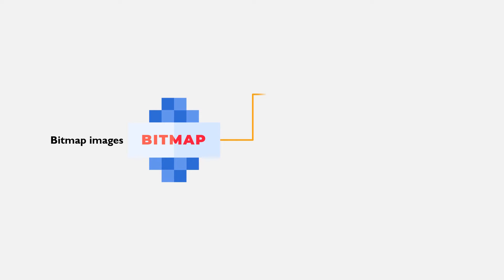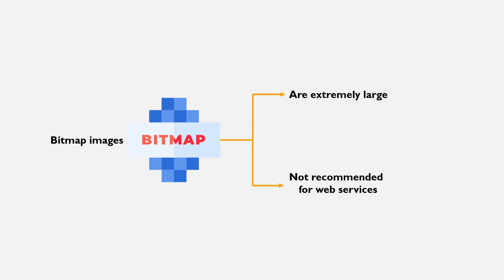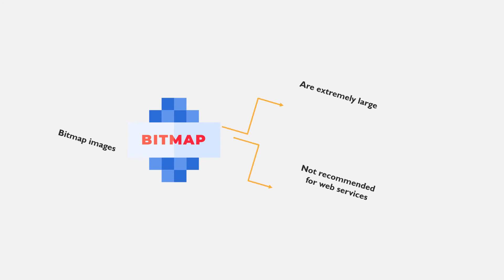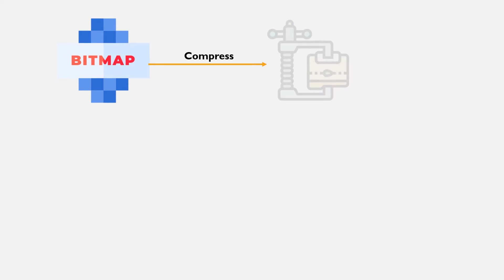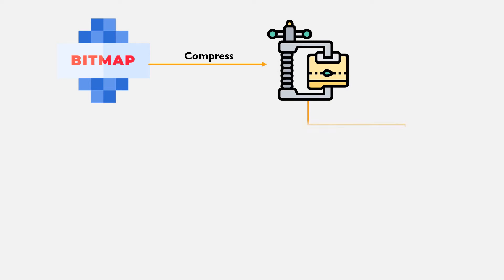These computer programs will allow you to manipulate and save images in a raw file format called bitmap. However, traditional bitmap images are extremely large. In today's computer operations, such sizes are not recommended and they are not used for web services. As a result, it permits a user to save images in other acceptable formats such as JPG, PNG, TIFF, HEIC, and GIF. These file formats help to compress bitmap image files to smaller sizes that are more efficient to use.